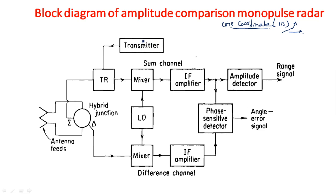The transmitting section is the same as before. The output of the transmitter is given to a duplexer - TR stands for transmit and receive. The duplexer output is given to the hybrid junction. The antenna now has two feeds, and the hybrid junction is nothing but a rat race junction, magic T junction, or E junction. This hybrid junction gets input from the transmitter and distributes it to the two feeds.